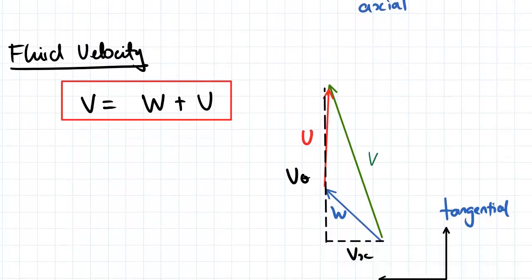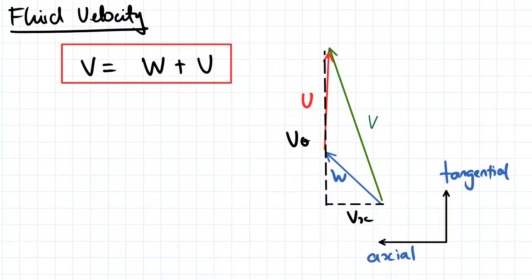Looking more closely at fluid velocity, when we consider fluid velocity, the total velocity V is made up of the summation of components W and U. We can enter our relationship with our axial velocity, that of our fluid, and our tangential velocity, which is of our pump.